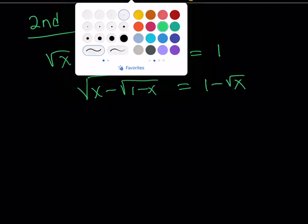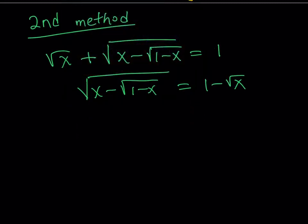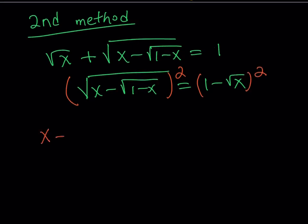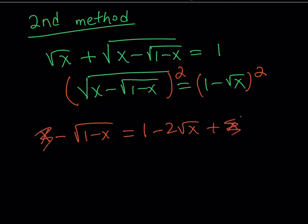I haven't paid attention to the domain here because I'll check my solutions at the end. If we square both sides, the radical cancels out, and we get x minus the square root of 1 minus x equals — this is like an (a minus b) squared — which is 1 minus 2 times the square root of x plus x. Notice that the x cancels out on both sides.